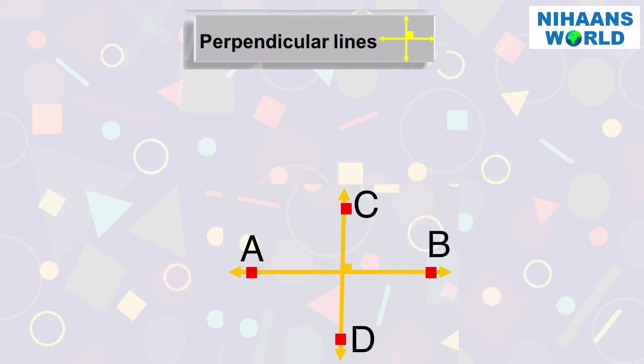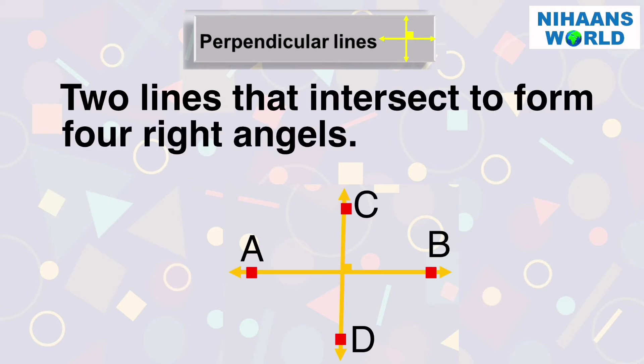What is a perpendicular line? A perpendicular line is two lines that intersect to form four right angles. For example, AB and CD.